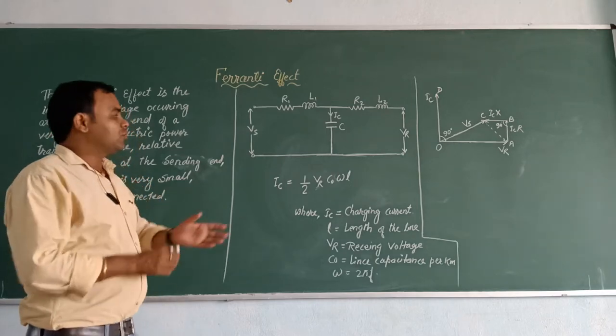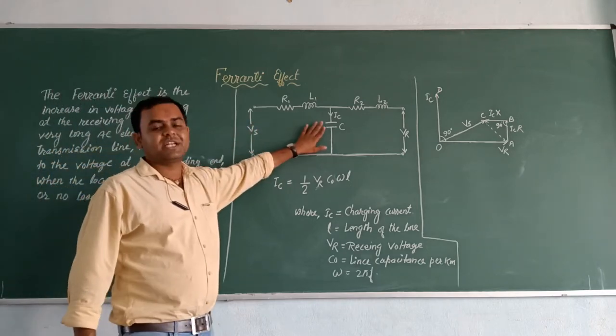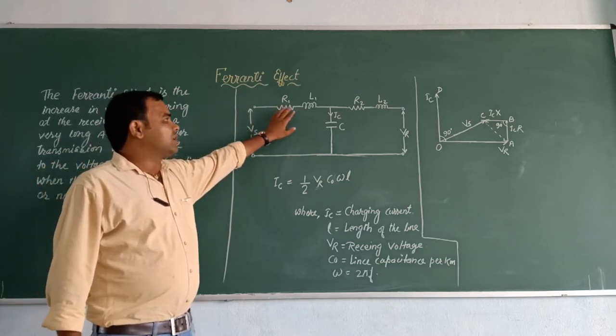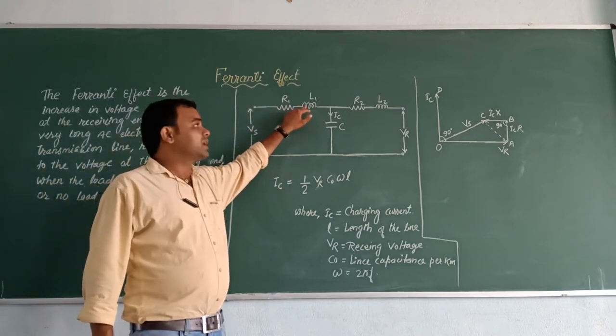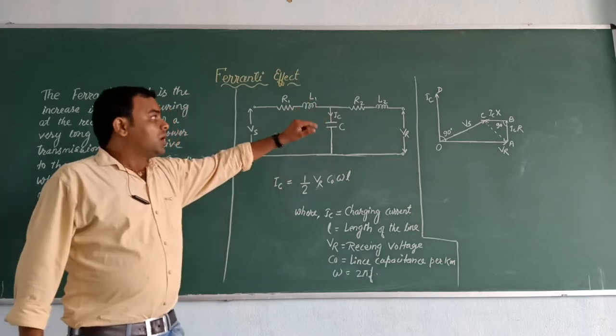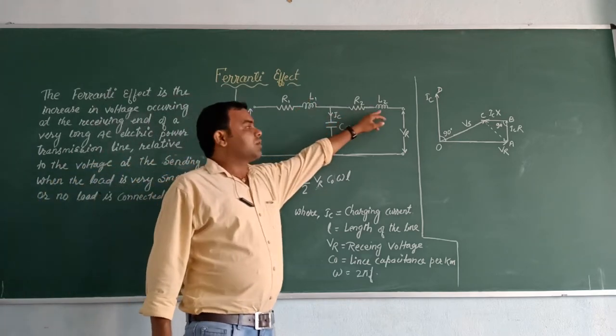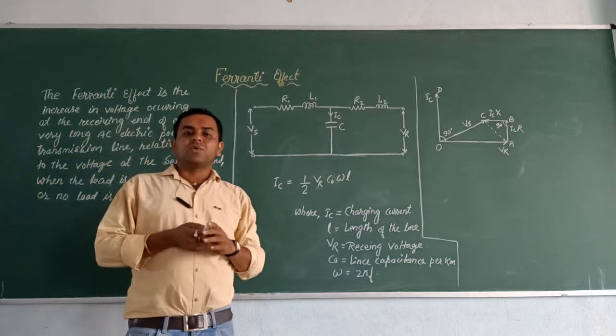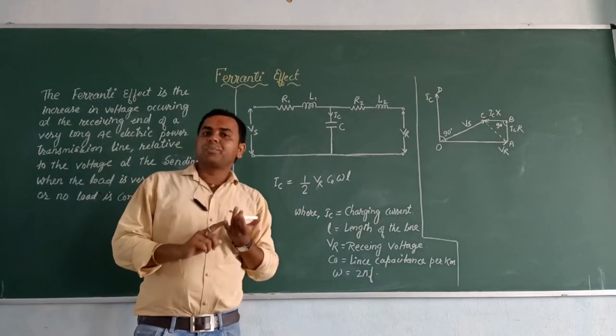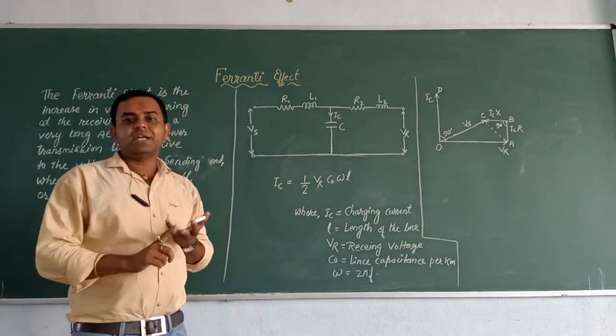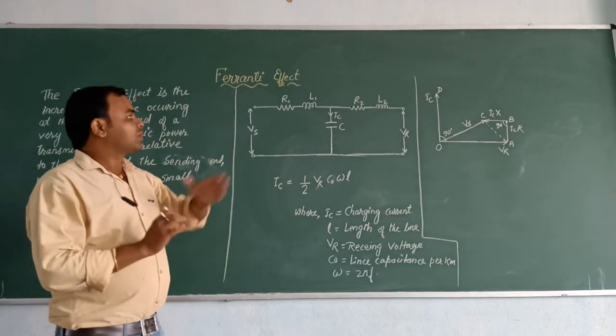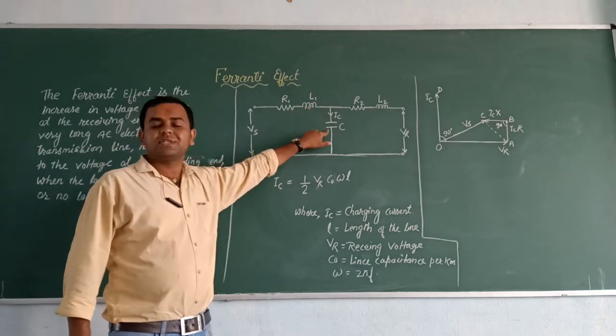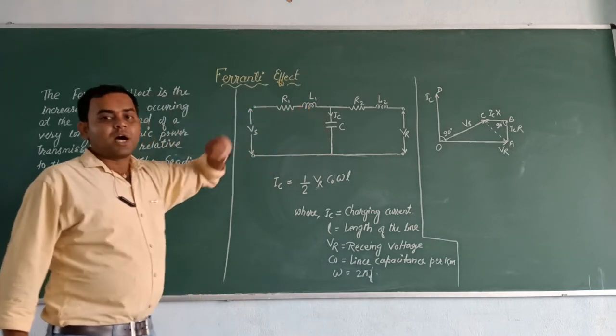So first of all, we have a circuit where there is some resistance R1 and some inductance. And here is R2. As we go to the transmission line, there are three properties: resistive property, inductive property, and capacitive property. What is the case?